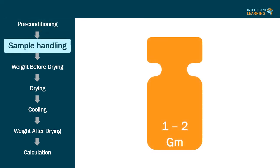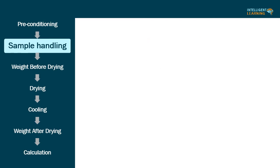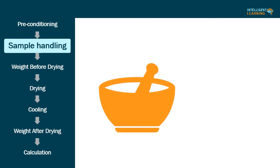Second step: sample handling. Unless otherwise directed in the individual method of analysis, for determination of loss on drying, take 1 to 2 grams of test specimen. Mix the substance to be tested, and if it is in the form of large particles, reduce the particle size to about 2 mm by crushing.